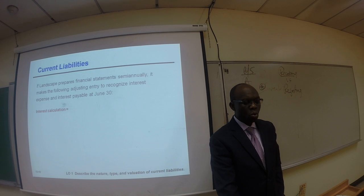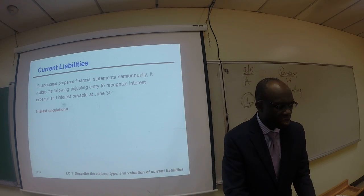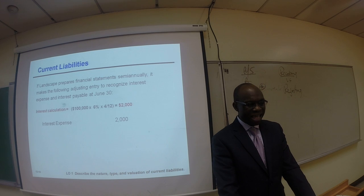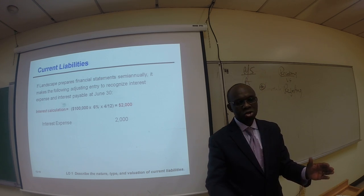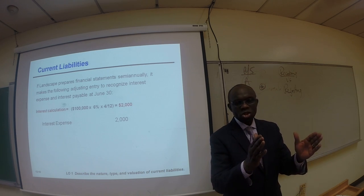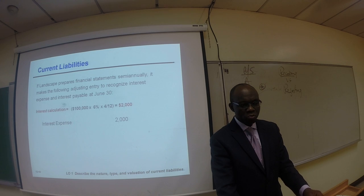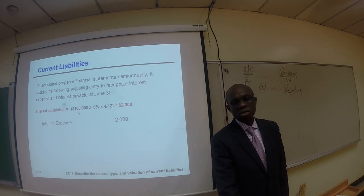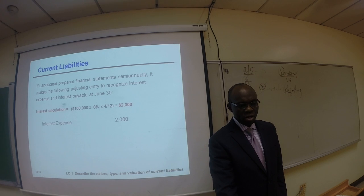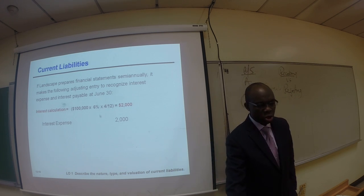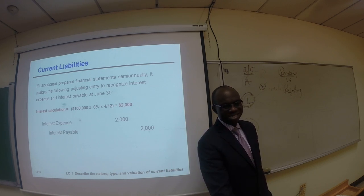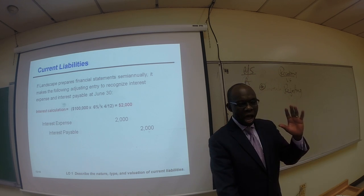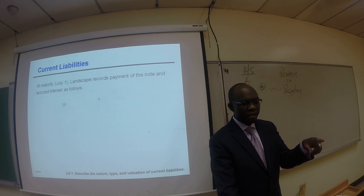Let's take a look at what happened at the end of June. The payment is due on July 1st, so at the end of June — assuming the company is preparing their financial statements every six months — they need to accrue for the interest for the four-month period from March 1st through June 30th. To calculate interest: principal times rate times time — $100,000 × 6% × 4/12 = $2,000. So interest expense is debited for $2,000 and interest payable is credited for $2,000 at June 30th.